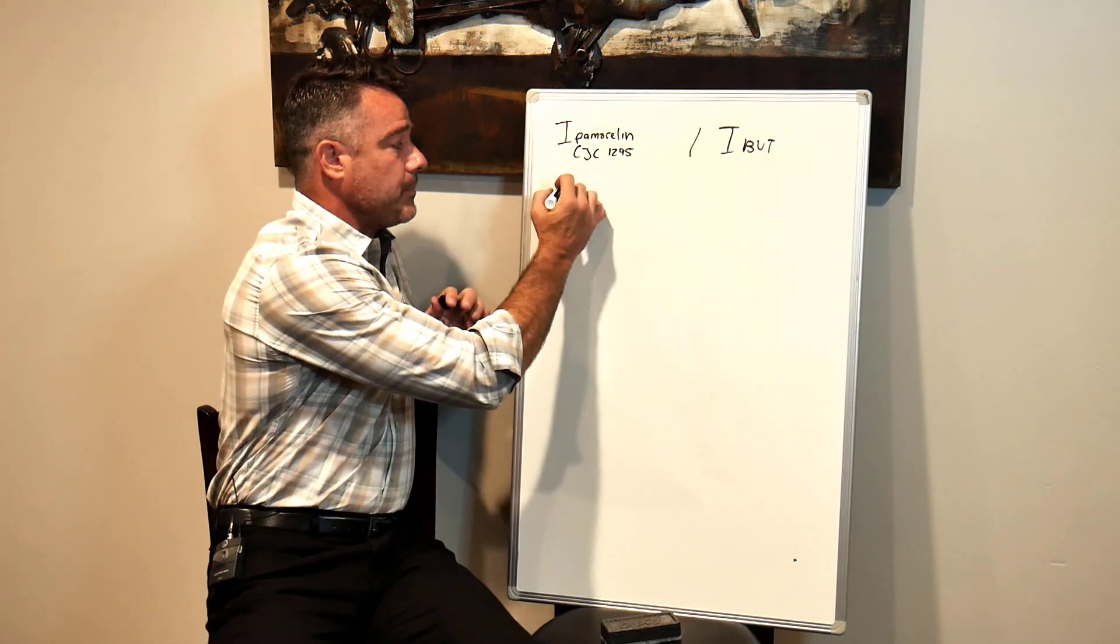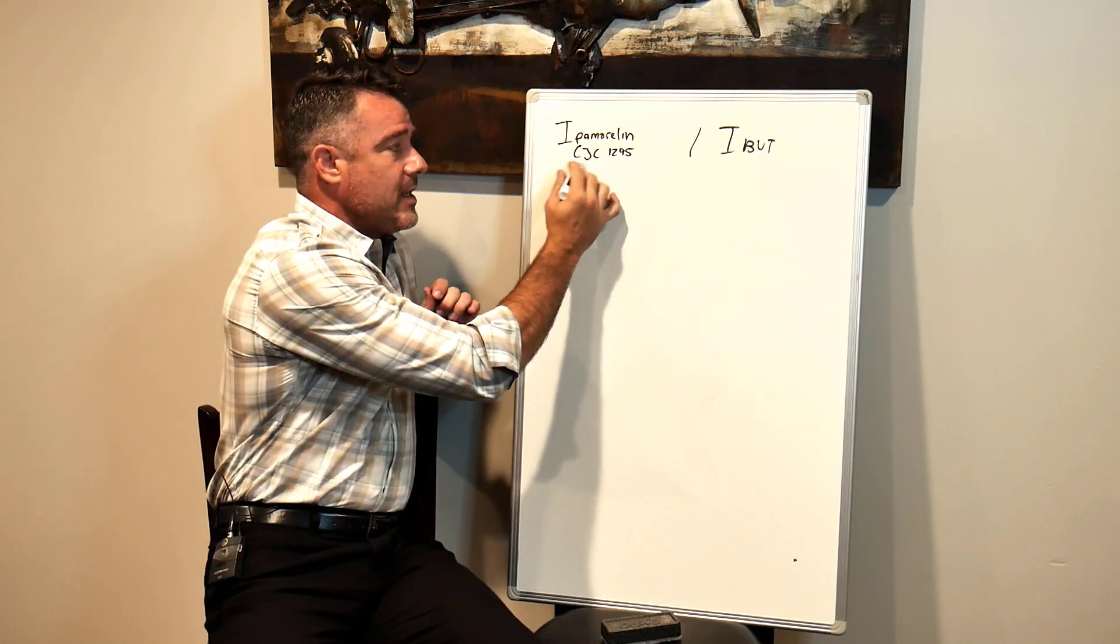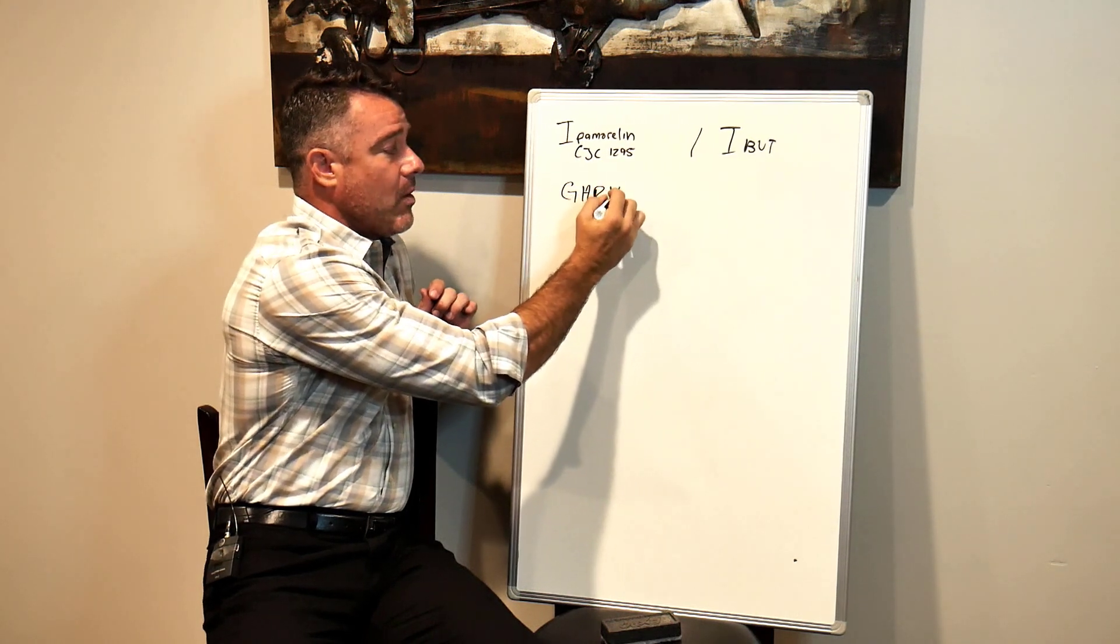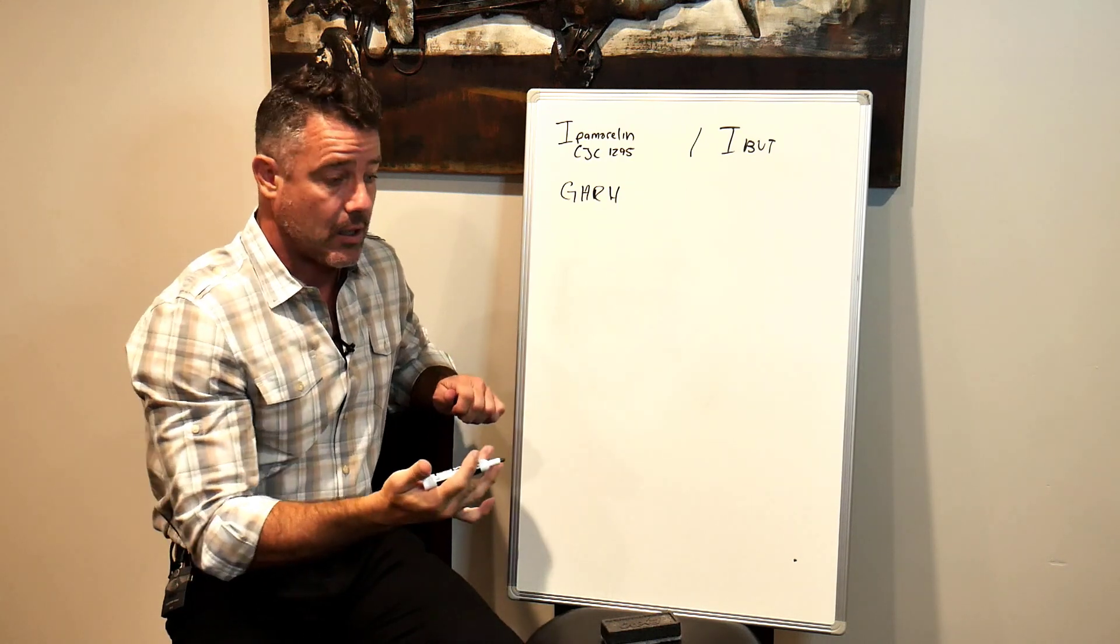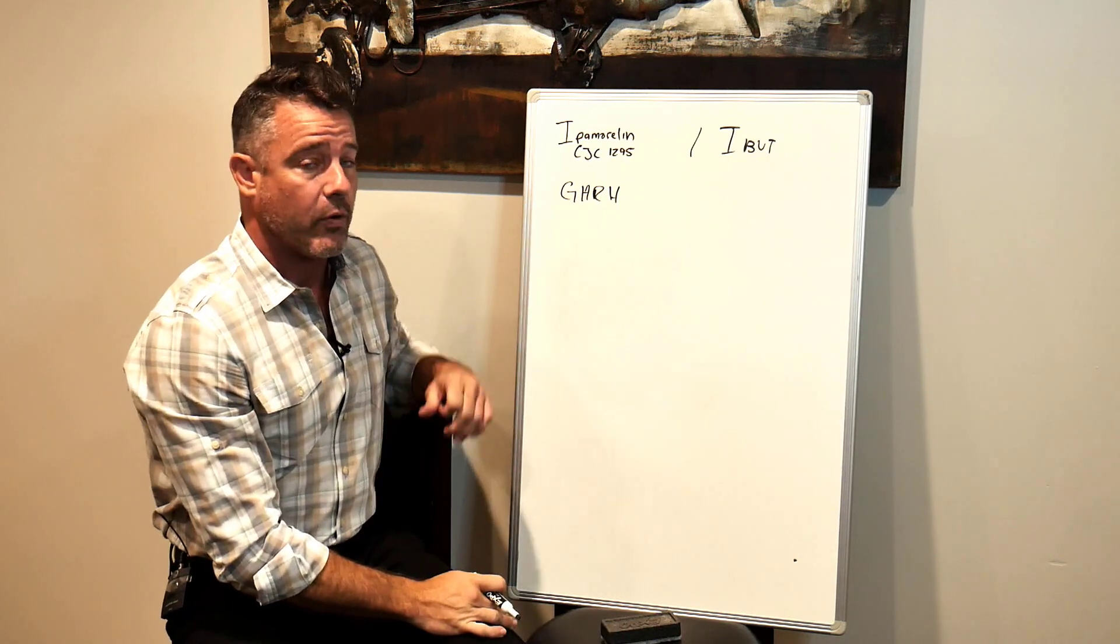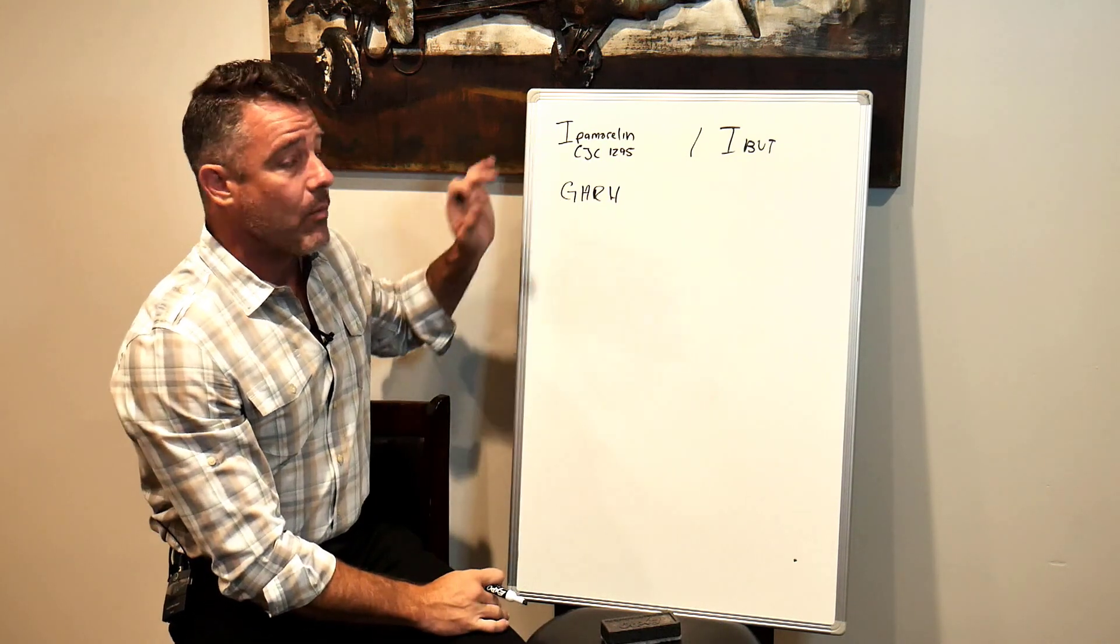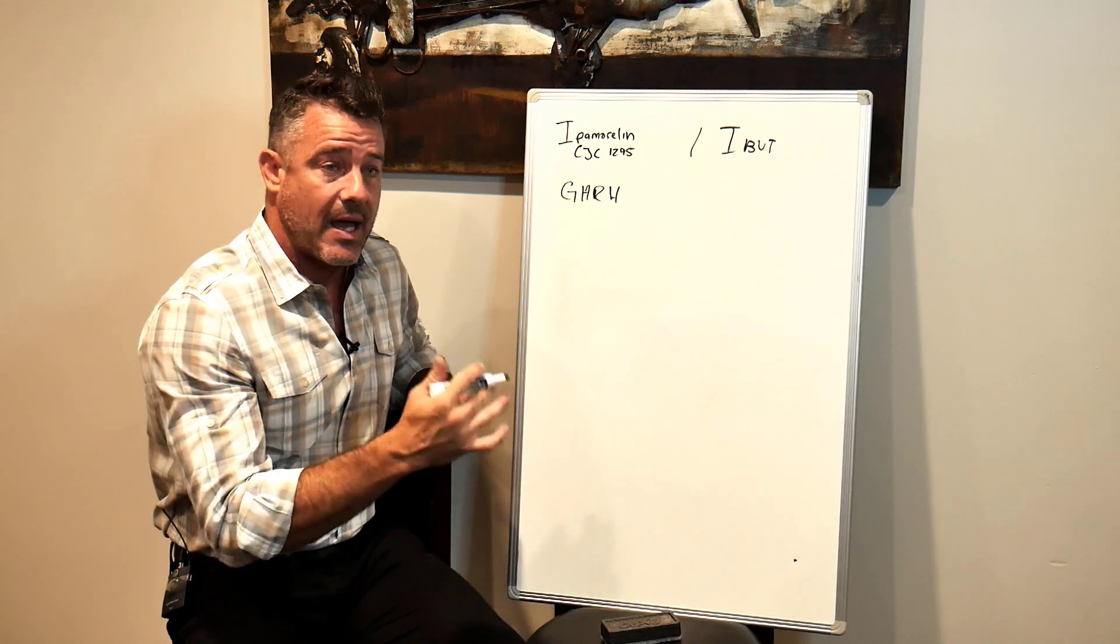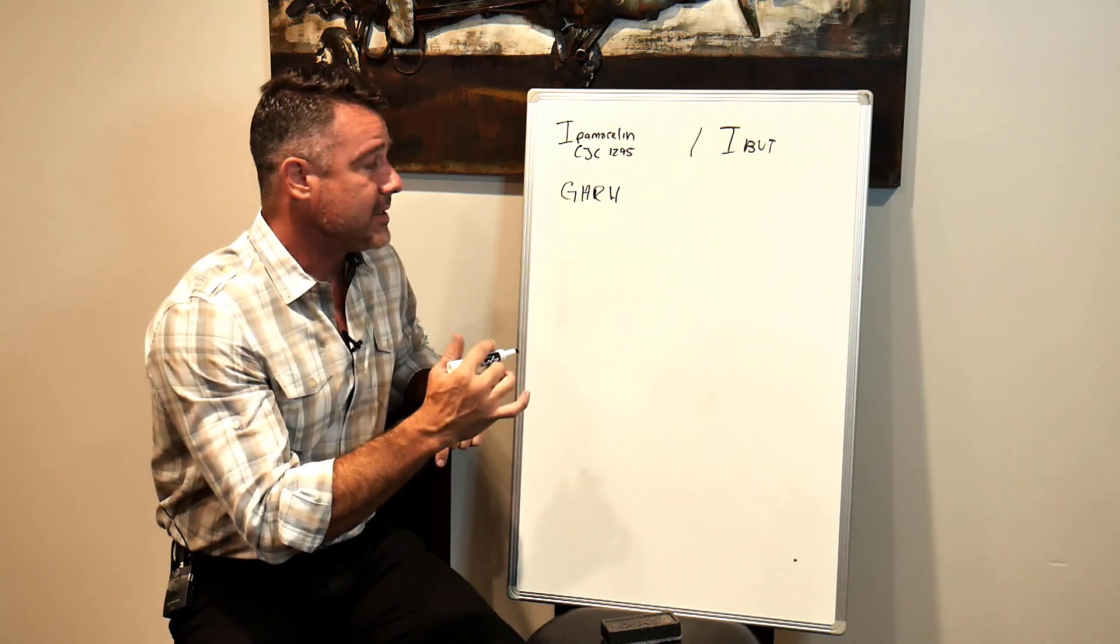The way these work, Ipamorelin and CJC-1295 work together. The CJC-1295 is a growth hormone releasing hormone mimic. The pituitary sees it and goes, okay, I know what to do. You're growth hormone releasing hormone, I'm going to make growth hormone. And Ipamorelin, what it does is it shuts down the production of the somatostatin. So what this does, it opens the door.